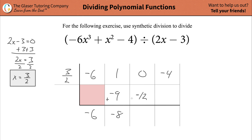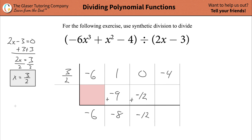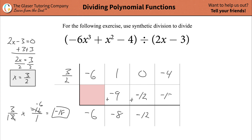Do your addition here: 0 plus negative 12 is just negative 12. Then take this result and multiply it by 3 over 2. So 3 over 2 times negative 12 over 1 — you can simplify, divide out the 2, that becomes 1, the 12 becomes negative 6, and then 3 times negative 6 is negative 18. That number gets plugged in here — negative 18.